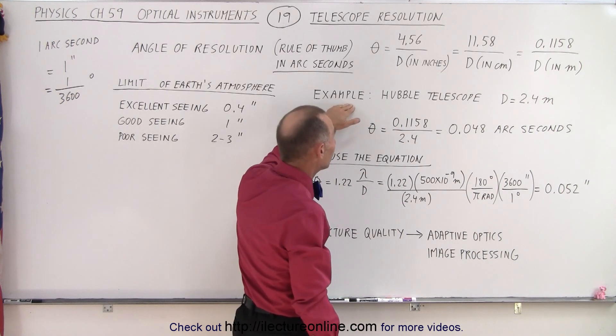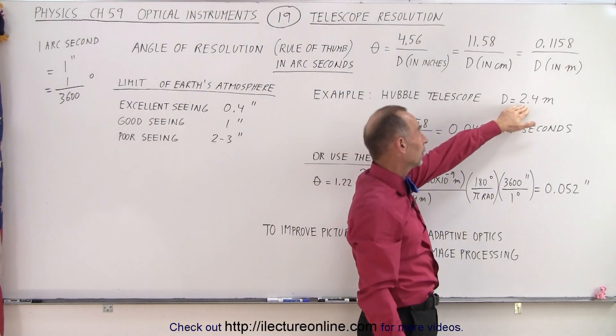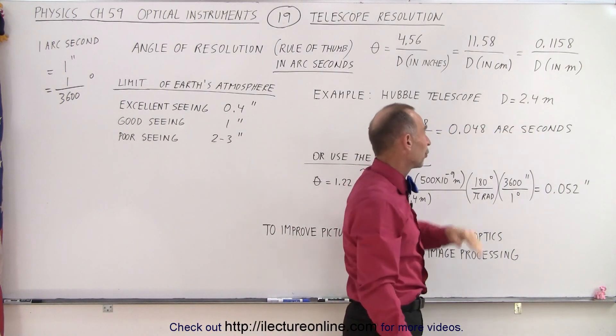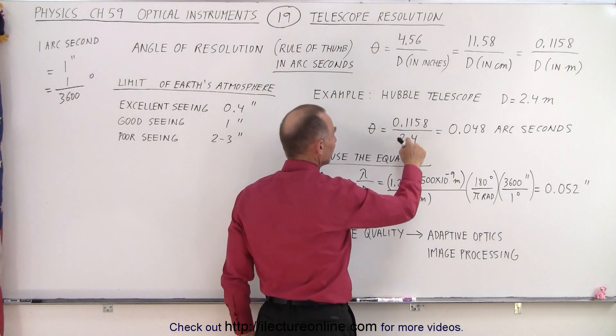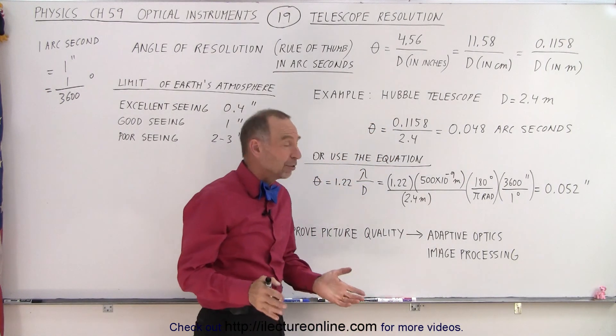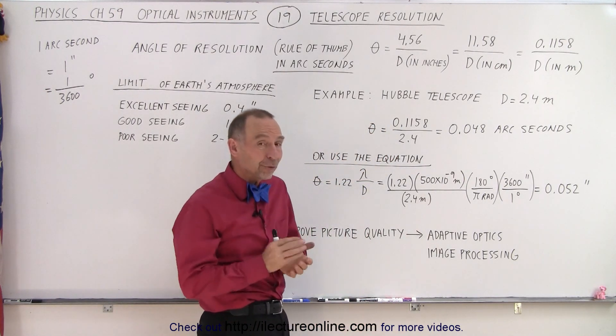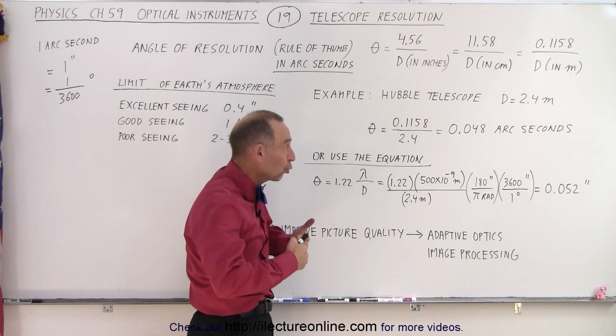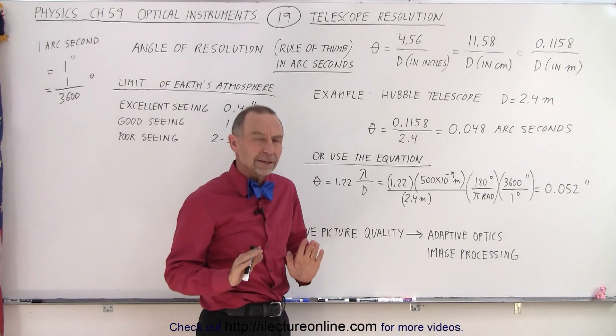For example, if we take the Hubble telescope that has a diameter of the objective mirror of 2.4 meters, we take 0.1158 divided by 2.4, and you can see that the resolution is about 0.048 arc seconds, essentially 1/20th of an arc second. That's absolutely amazing.